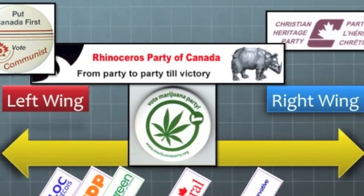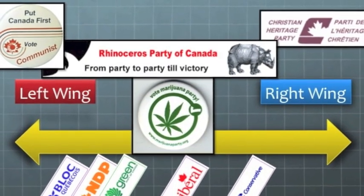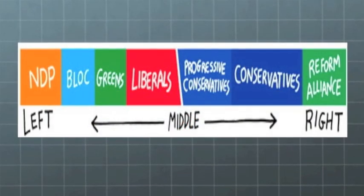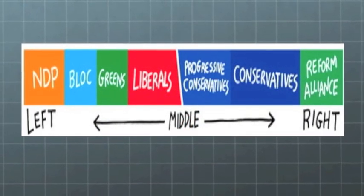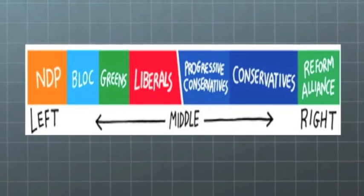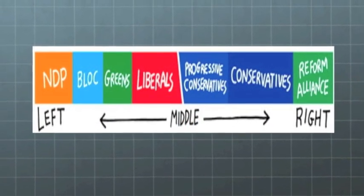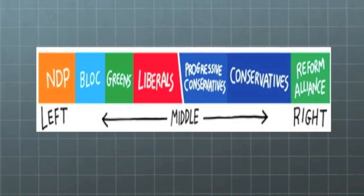Canada has dozens of political parties, so we say that we're a multi-party system. Why so many parties? Because we're a diverse country with a lot of different ideas. We want to be able to support a party that fits best with our ideology or beliefs.